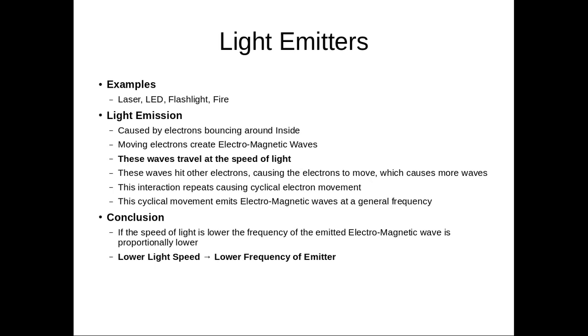Examples of light emitters are lasers, LED, flashlights, fire. Light emission is caused by electrons bouncing around inside. Moving electrons create electromagnetic waves. These waves travel at the speed of light.